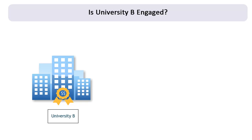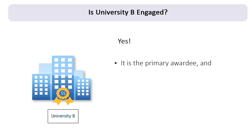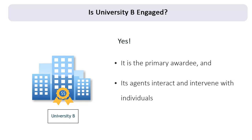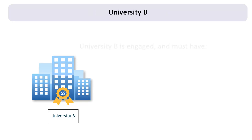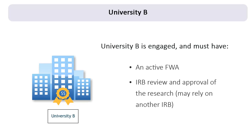Is University B engaged? Yes. University B is engaged because it is the primary awardee of the NIH grant for non-exempt human subjects research. In addition, its agents conduct human subjects research activities when they interact and intervene with individuals through recruitment, obtaining informed consent, and collecting blood samples for research purposes. University B is engaged and will need to have an FWA along with IRB review and approval of the multi-institutional research project. However, University B may rely entirely or in part on the review of another IRB or a central IRB so as not to duplicate effort.